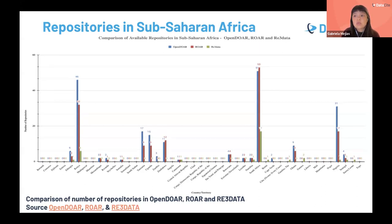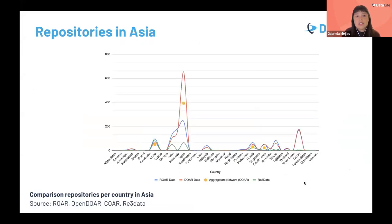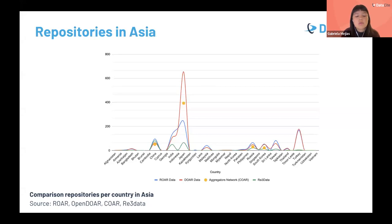In Asia, there is a high number of repositories in Japan, followed by India, Turkey, and China. We currently do have consortia in Japan and China. Thanks to this analysis, we can identify which countries have the most immediate critical mass in terms of infrastructure to be able to adopt Datasite tools and services. For countries that don't yet have this critical mass or have this lack of infrastructure, we can support them through more awareness and also through funding to develop that infrastructure.